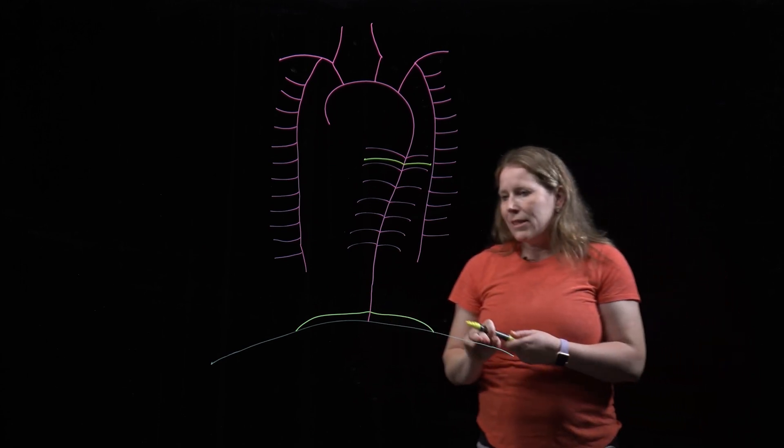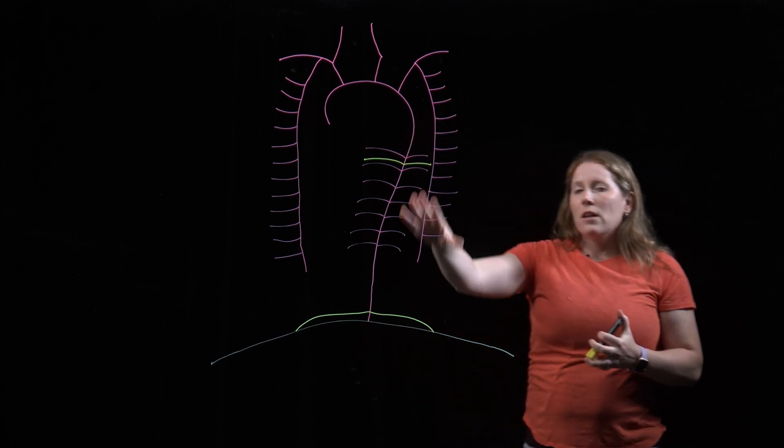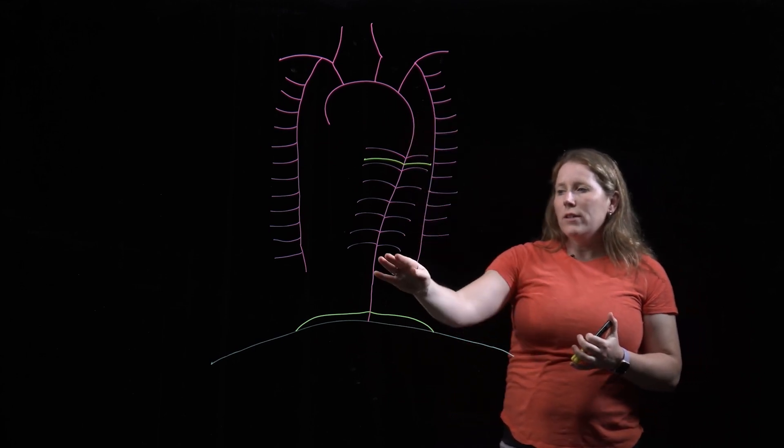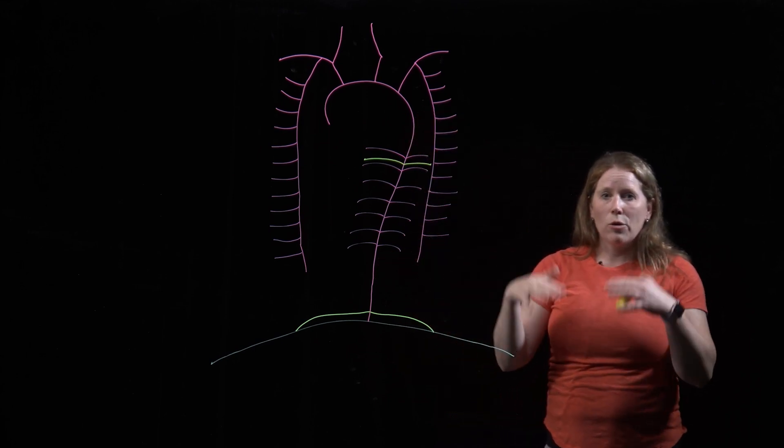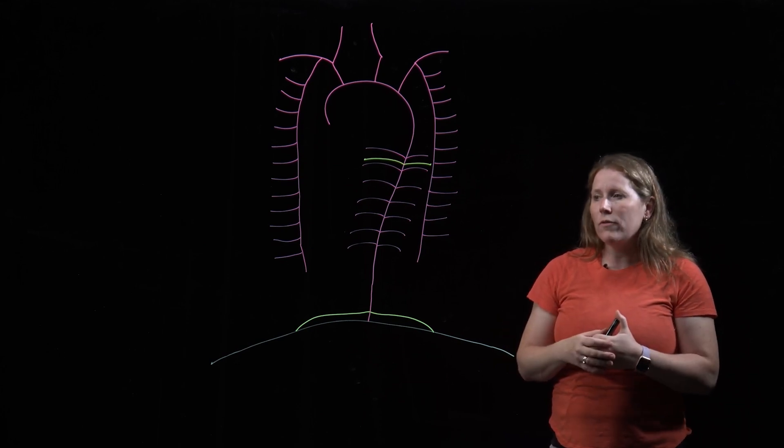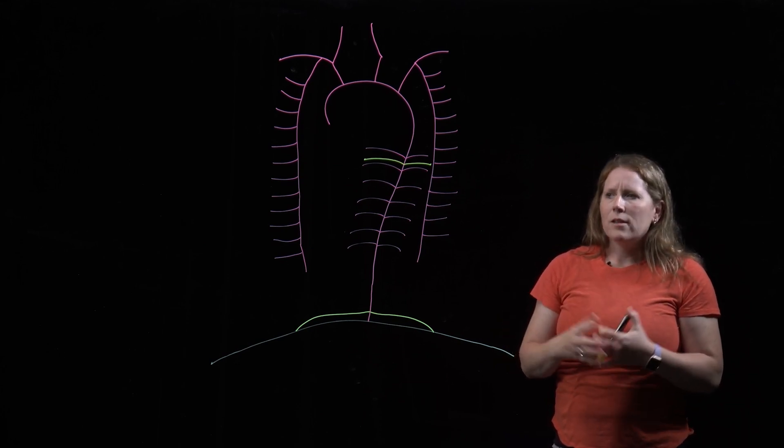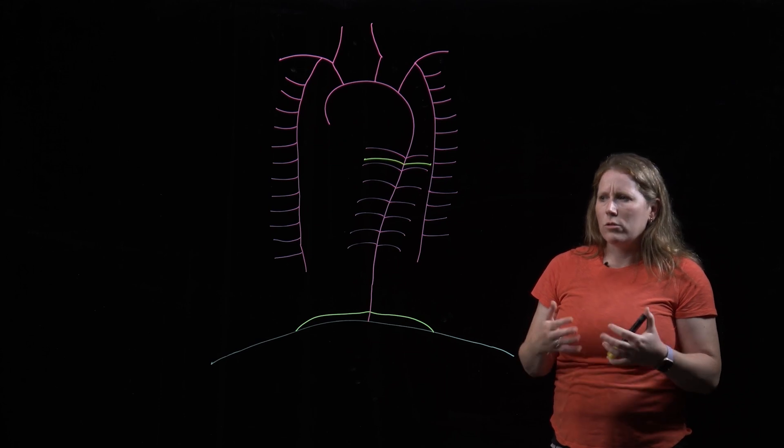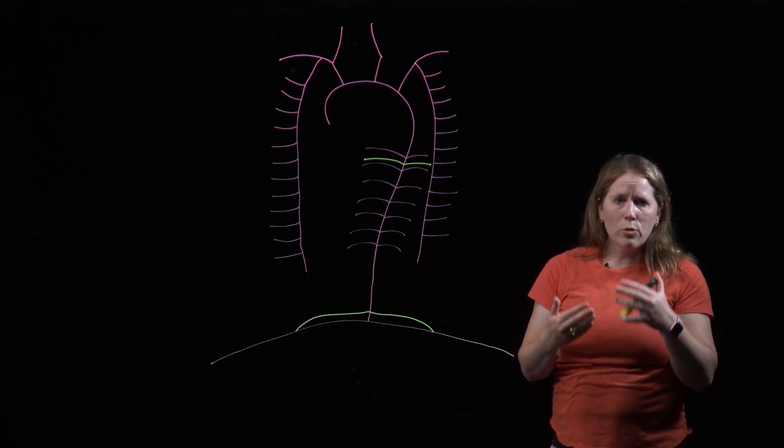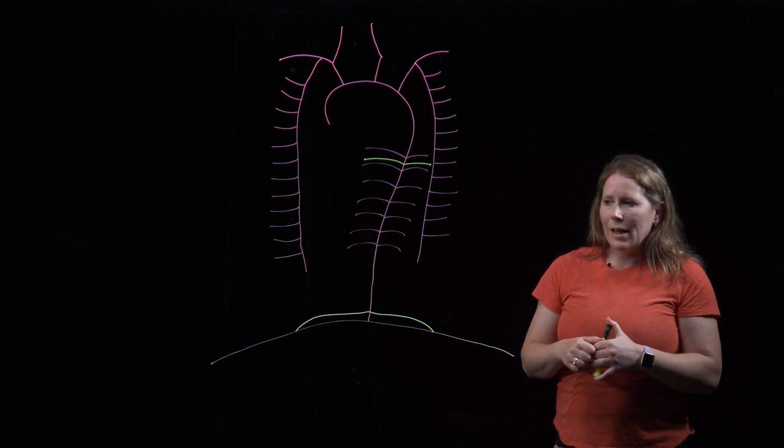And one last thing I'll point out is that in this set of intercostal arteries, when you get to the 12th pair or the pair that sit just below rib 12, those always get referred to as subcostal arteries as opposed to intercostal, because they're no longer between two ribs but below the last pair of ribs.